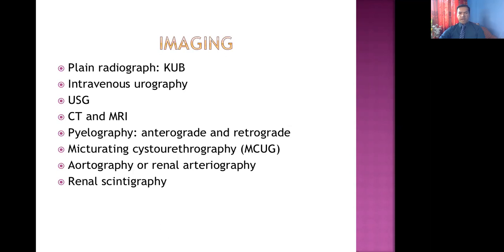Ultrasonography is a very important test, and CT and MRI can also be done. Pyelography — pyelo meaning renal pelvis — can be anterograde or retrograde; anterograde is similar to IVU, while retrograde means injecting dye from below. Micturating cystourethrography or MCUG is especially for diagnosis of vesicoureteric reflux and is done with catheterization. Aortography or renal arteriography is done when renal artery stenosis is suspected. Renal scintigraphy is a radionuclide test usually done for estimation of GFR.